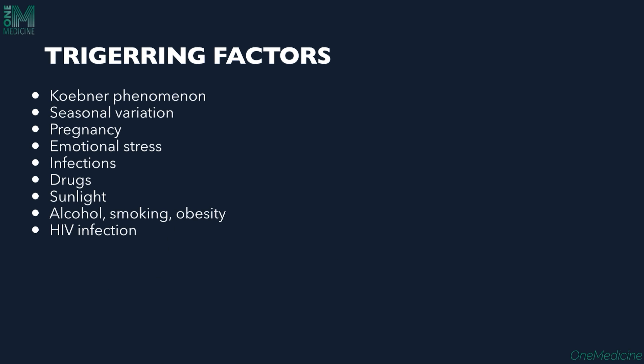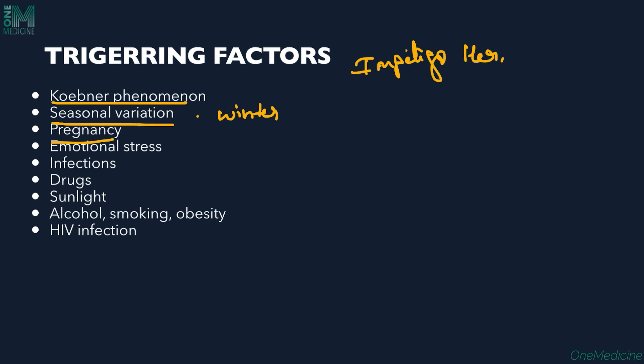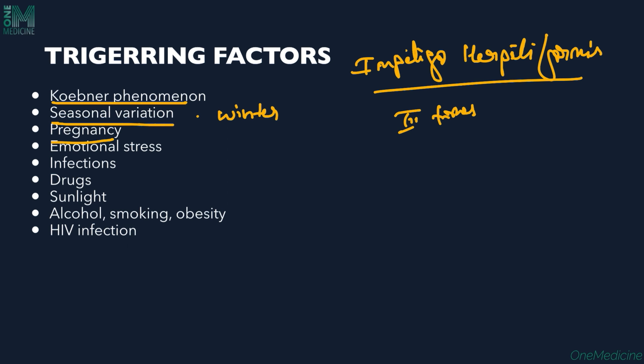Triggering factors in psoriasis include Koebner's phenomenon - an isomorphic phenomenon wherein lesions similar to psoriasis appear in uninvolved skin. Seasonal variation: psoriasis cases increase in winter. In pregnancy there will be remission, then after pregnancy there can be exacerbation. There is also a variant called impetigo herpetiformis, which is a pustular variant occurring in the third trimester - a serious condition requiring different treatment.